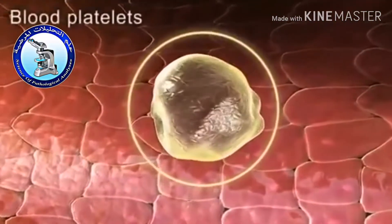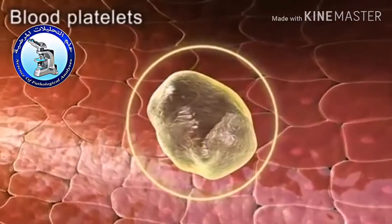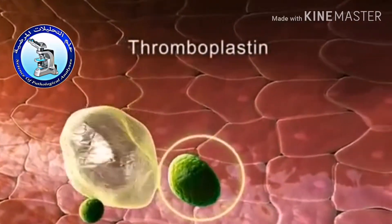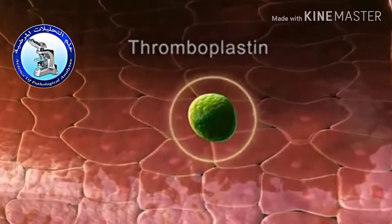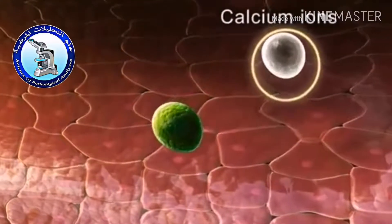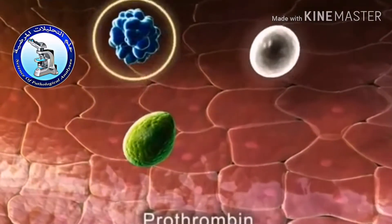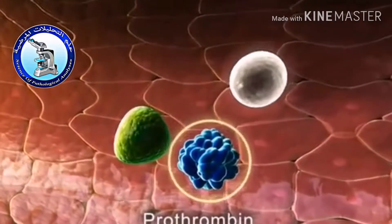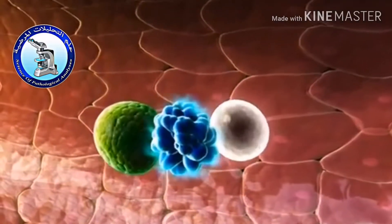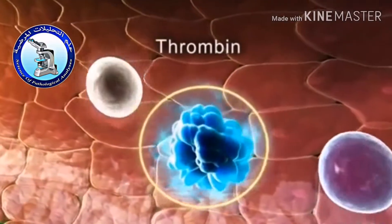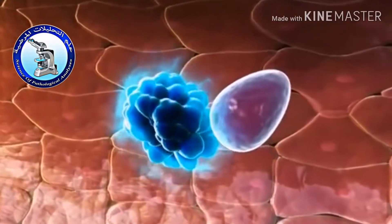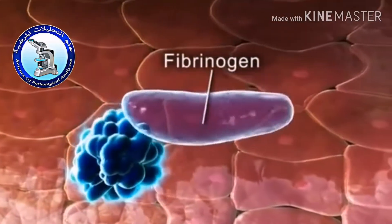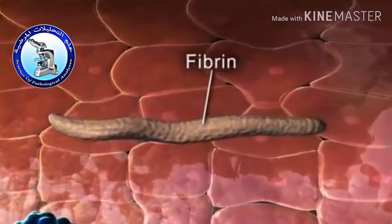The blood platelets release a substance called thromboplastin. In the presence of thromboplastin and calcium ions, the prothrombin present in the blood gets converted into thrombin. This thrombin now catalyses the conversion of fibrinogen into fibrin.